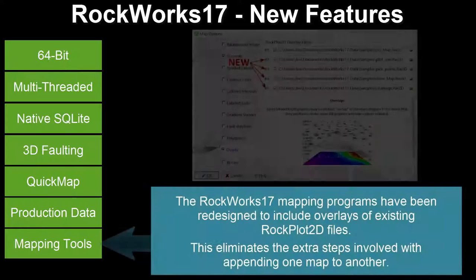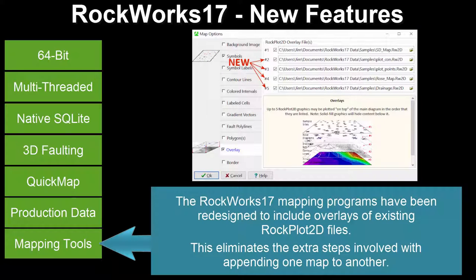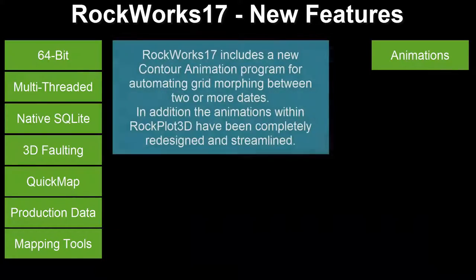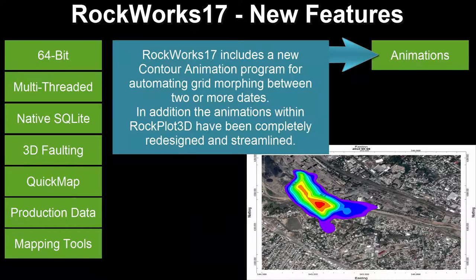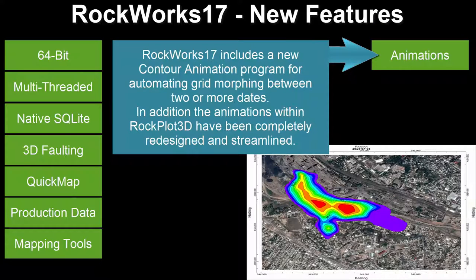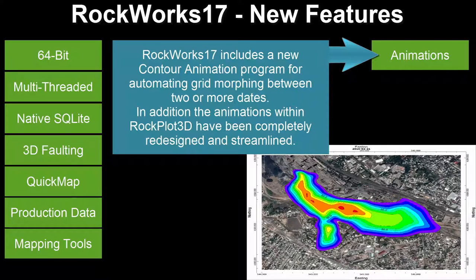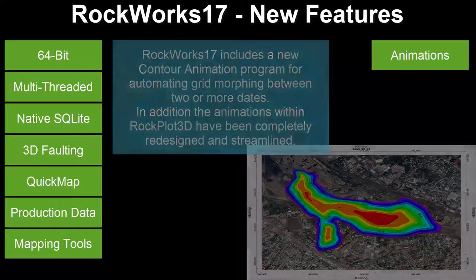The RockWorks 17 mapping programs have been redesigned to include overlays of existing RockPlot 2D files, eliminating the extra steps involved with appending one map to another. RockWorks 17 includes a new contour animation program for automating grid morphing between two or more dates. In addition, the animations within RockPlot 3D have been completely redesigned and streamlined.